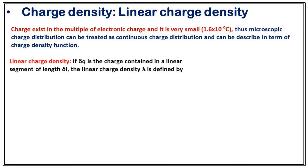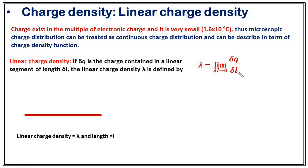The first is linear charge density. If δq is the amount of charge contained in a linear segment of length δl, then the linear charge density λ is defined as λ = lim(δl→0) δq/δl. If we have a rod of linear charge density λ and length l, the total charge on it is obtained by integration: Q = ∫₀ˡ λ dl.